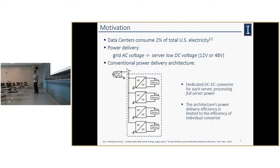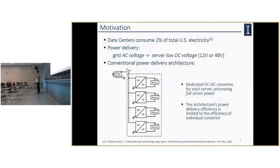The motivation: data centers consume a lot of electric energy nowadays. For example, in 2014, US data centers consumed 2% of the national electricity. Servers are the key component in data centers that consume electric energy, and they use a low DC voltage at their input. We need a power delivery architecture to convert the grid AC voltage into the low DC voltage that servers can use. Since servers consume such a great amount of energy, we want to improve power delivery efficiency.